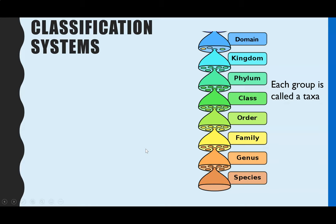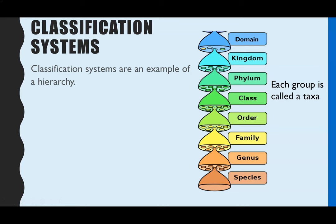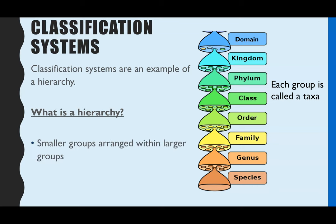Classification systems link to what we looked at with the binomial naming system. One way to classify is using a hierarchy system. You need to know what hierarchy means in terms of classification — it's always a two-mark question on an AQA paper with these exact two answers: number one, smaller groups are arranged within larger groups; number two, there is no overlap between the groups.